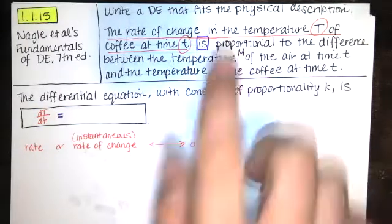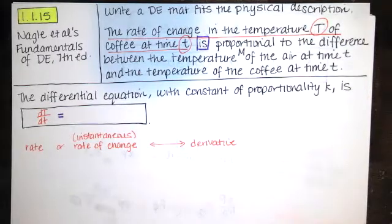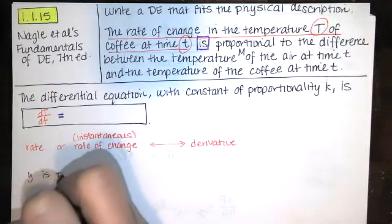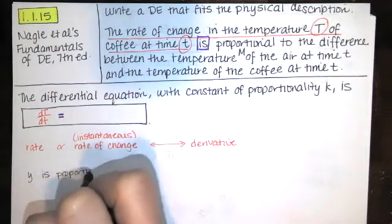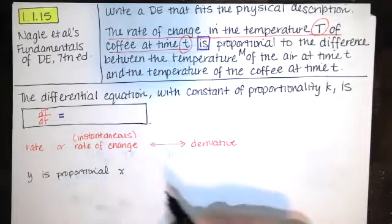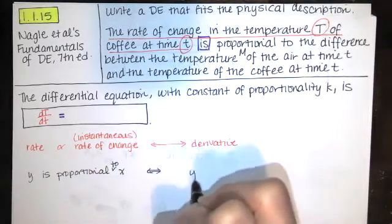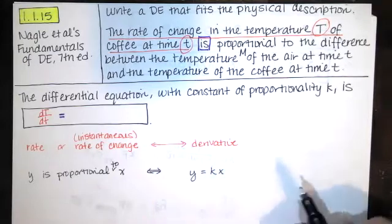First, we need to understand what this word proportional means. If I'm told that y is proportional to x, what that means is that y is equal to a constant times x.